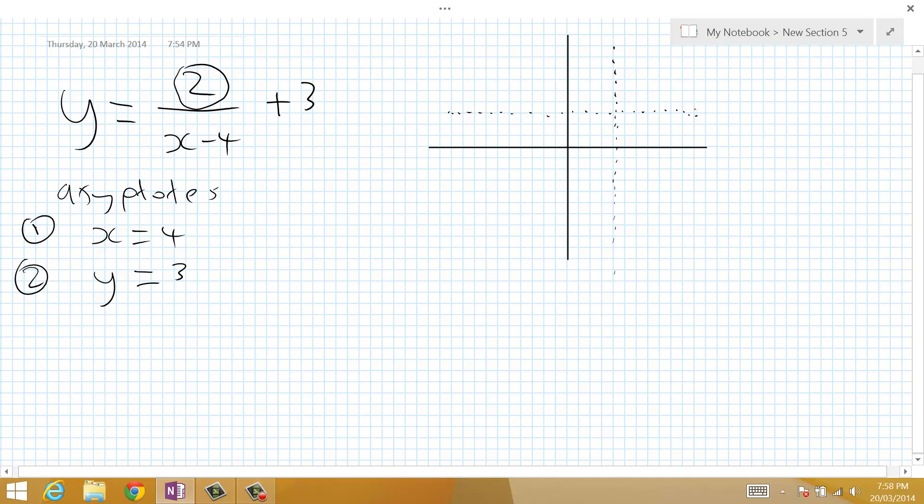We also know that this is a positive hyperbola, because 2 is a positive number. So this means we're going to be in this and this quadrant, the curves of our hyperbola. So we know this is positive.